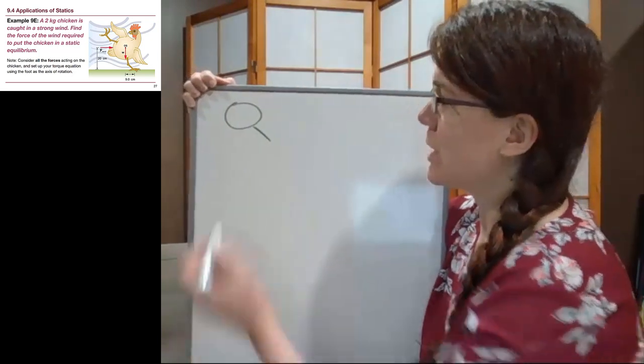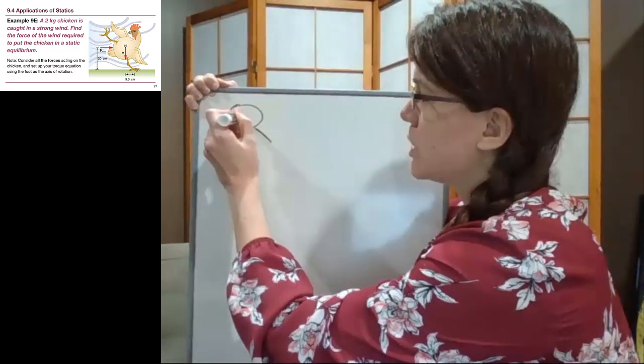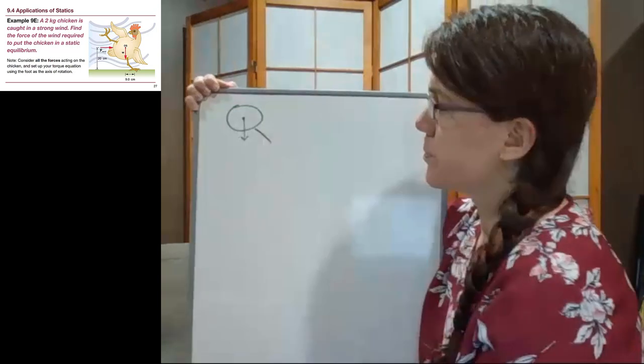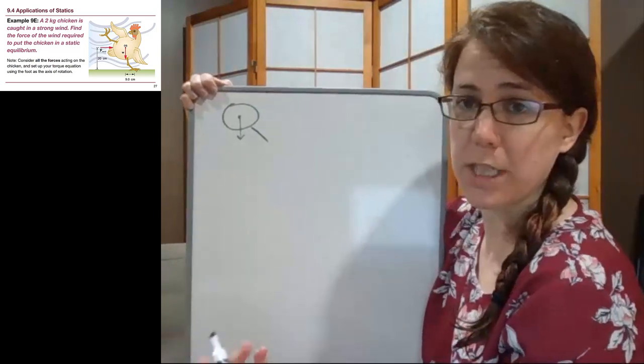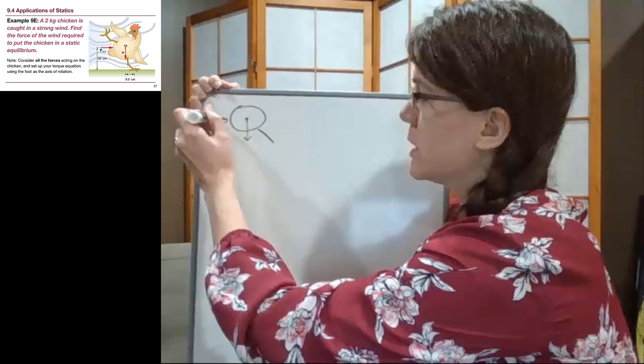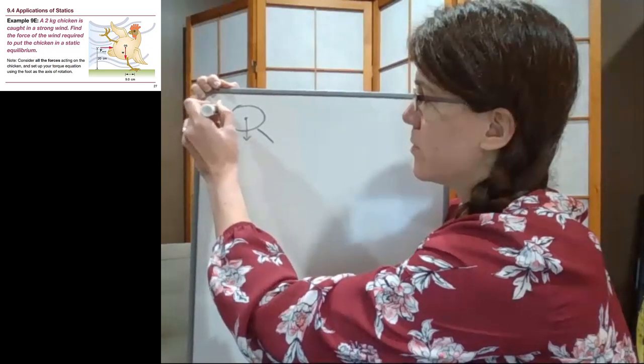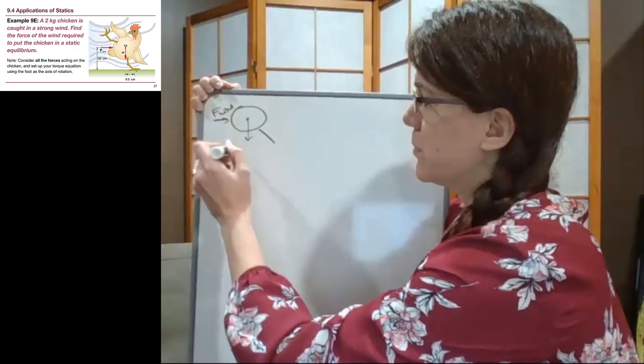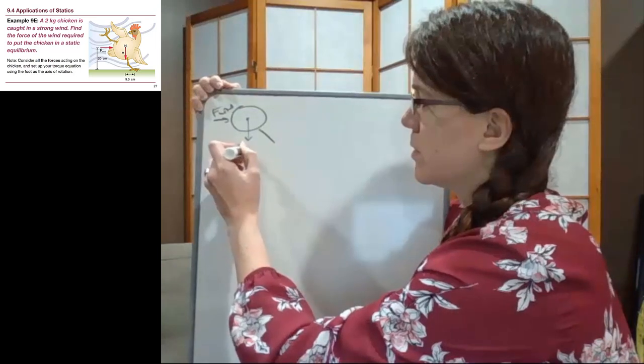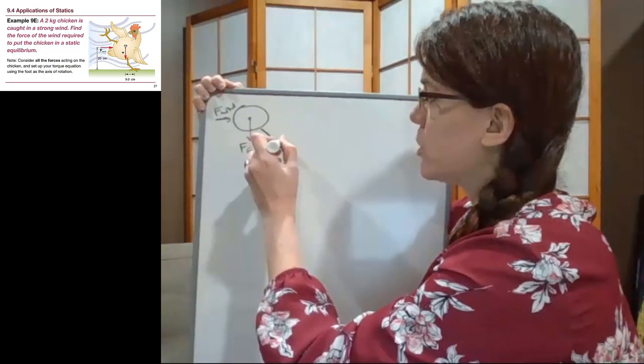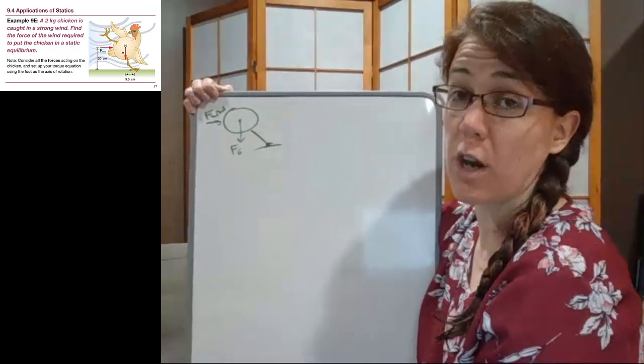So our picture here is the chicken and the center of mass of the chicken is acting at the center of the chicken and the wind is acting at the center of the chicken too. And we want to make sure we know that that foot is on the ground.